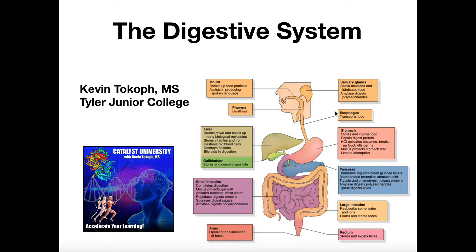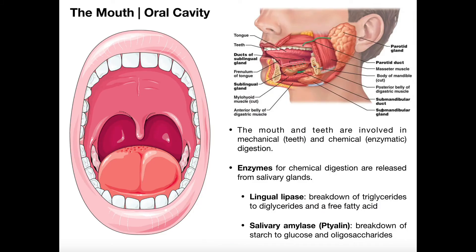We're going to begin a playlist over the digestive system. In each video we're going to look at a different part of the digestive system, working our way from the mouth all the way through the GI tract. We'll talk about various accessory organs along the way like the liver, the gallbladder, and pancreas, and then eventually follow the flow of the food out the anus. In this video we're going to start by looking at the oral cavity and a little bit of the pharynx.